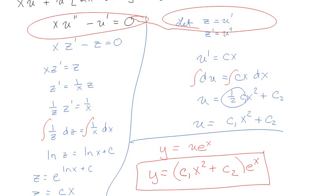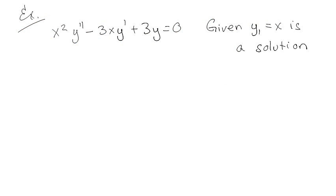So let's do one more. Alright, so we've got this one: x²y'' - 3xy' + 3y = 0, given that y₁ = x is a solution.